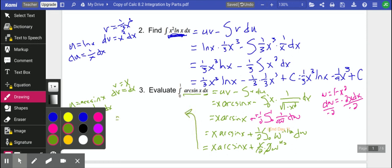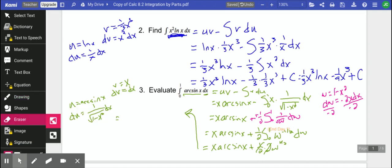So this will be x arc sine of x plus w to the 1 half. That's just the square root of w, and what did we decide on w? That was 1 minus x squared. So that is our anti-derivative. I think we're looking good so far. And we are supposed to evaluate this from 1 to 0.